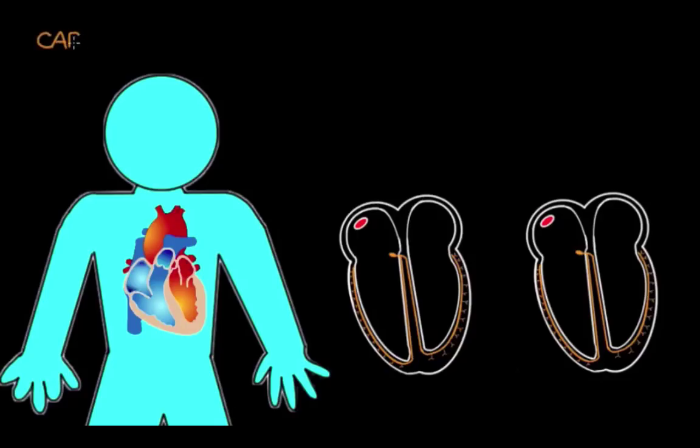In this video we're going to talk about cardiac ablation, a procedure used to treat arrhythmias. An arrhythmia is a problem with the heart's electrical system that causes the heart to have an abnormal rate, meaning it's too fast or too slow, or an abnormal rhythm. In the case of an abnormally fast heart rate, that's called a tachyarrhythmia.